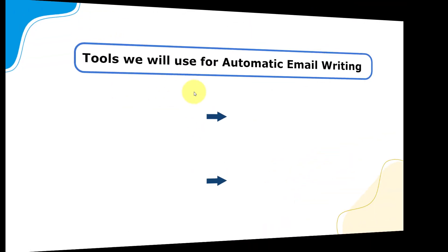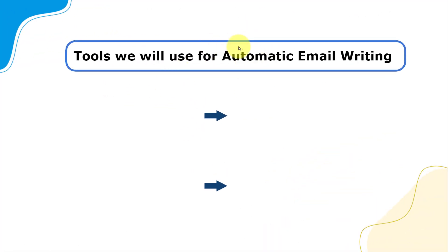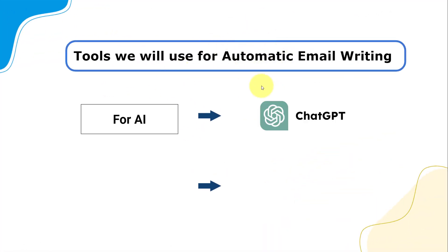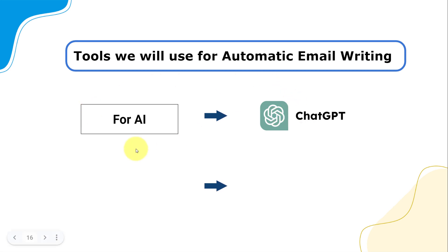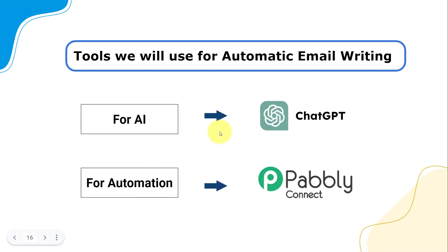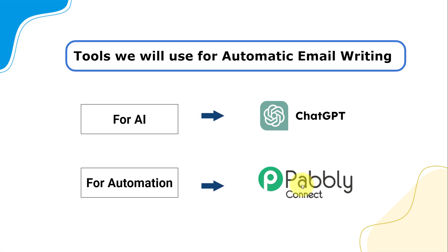The tools I am going to use for automatic email writing are: ChatGPT for AI, and Pabbly Connect for automation. Come with me and I will show you everything step by step.